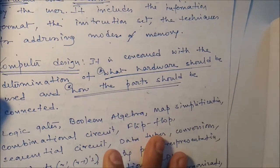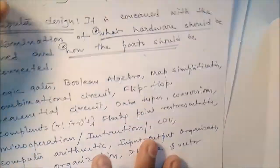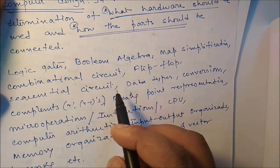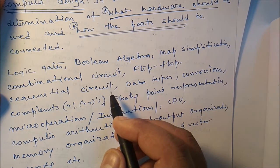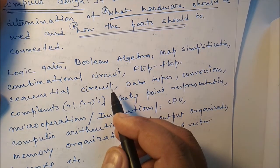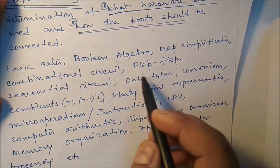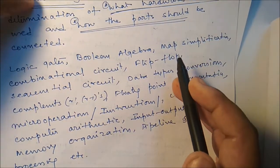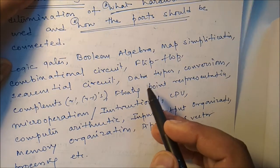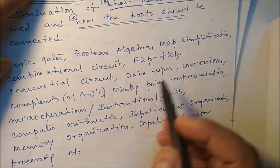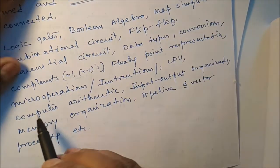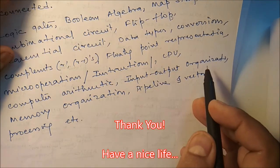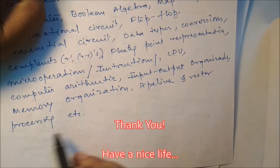This is the basis of computer organization and architecture. Now in this channel we will talk about logic gates, Boolean algebra, map simplification, combinational circuits - multiplexer, demultiplexer, encoder, decoder, binary adder, subtractor, flip-flops, different types like JK flip-flops and RS flip-flops, sequential circuits, counters, registers, data types, conversions, complements, floating point representations, micro operations, instructions, CPU, computer arithmetic, input-output organization, memory organization, pipeline, vector processing, etc.